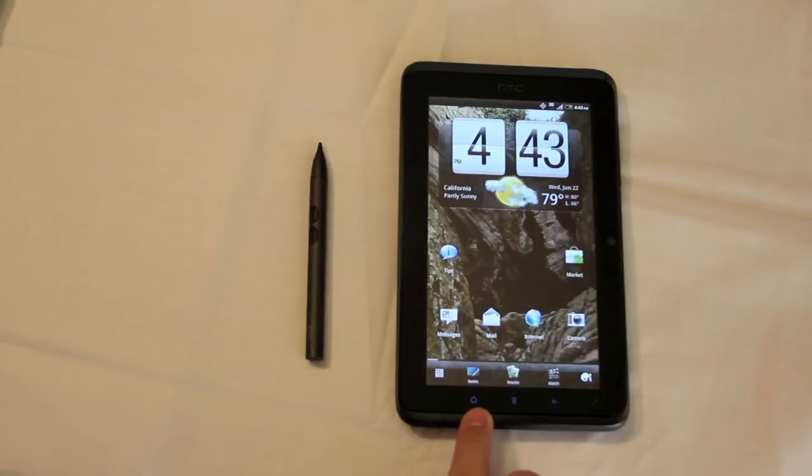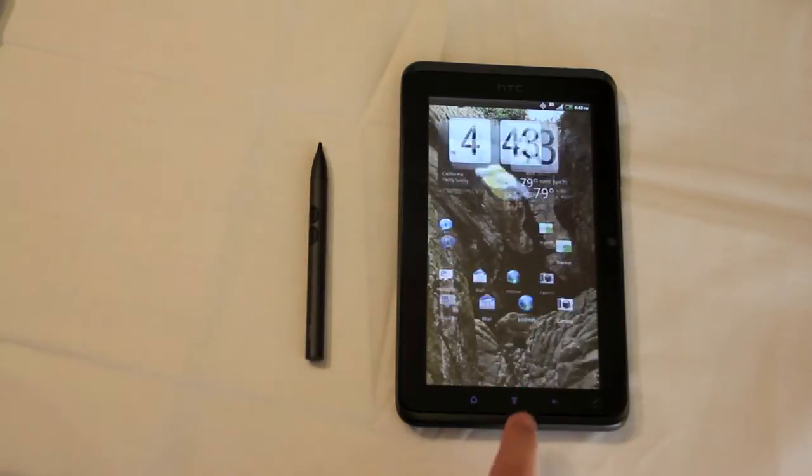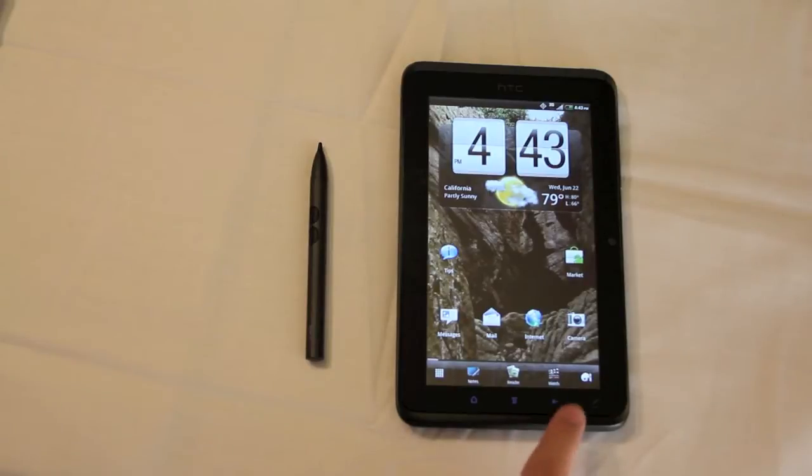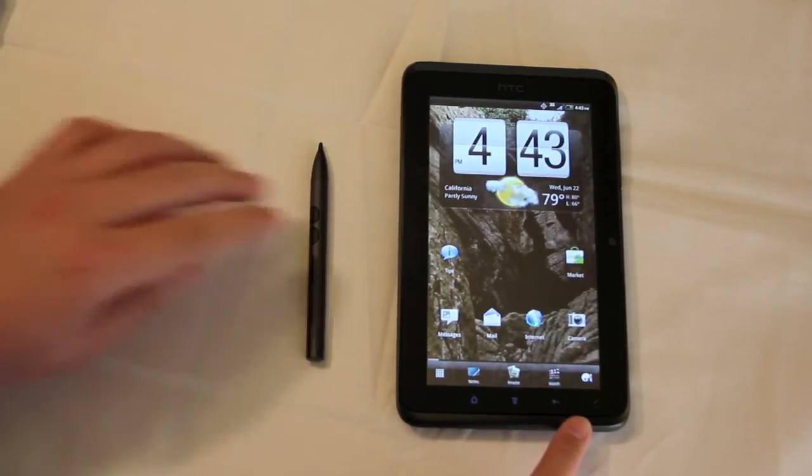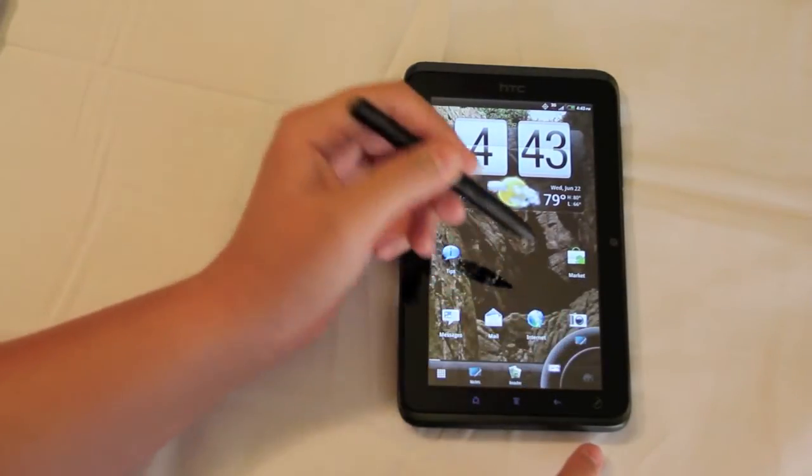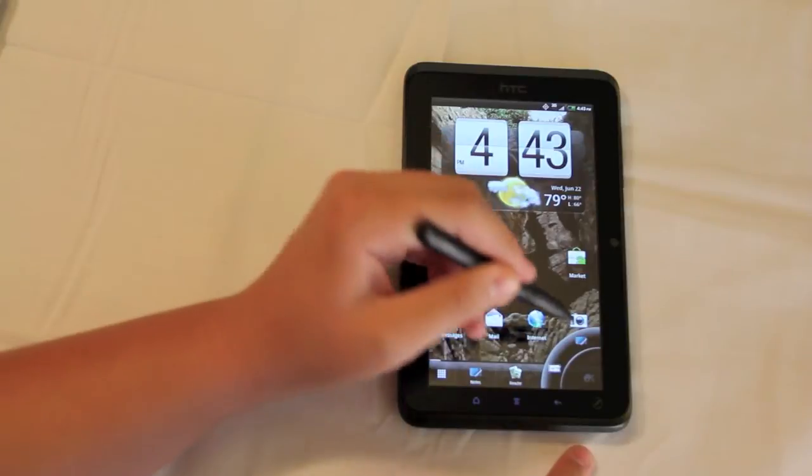On the front, we have a home button, a normal Android home button to bring you home, a menu button for the menus, a back button to bring you back to wherever you were, a 1.3 megapixel camera, as I showed you before, and this special pen button. And what this does is, with this special pen that you can get separately, or it comes with it on Sprint, you can bring up the pen menus.